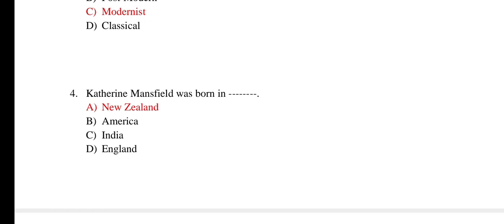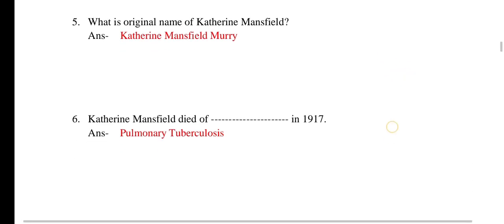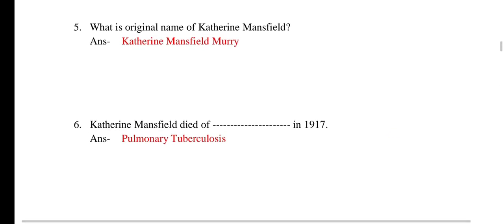The next question is: 'Katherine Mansfield was born in which country?' She was born in New Zealand. The next question is: 'What is the original name of Katherine Mansfield?' The answer is Katherine Mansfield Murray. The next question is: 'Katherine Mansfield died of ___ in 1917.' She died of pulmonary tuberculosis.